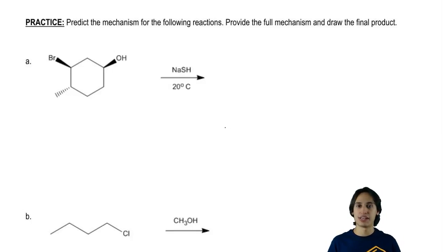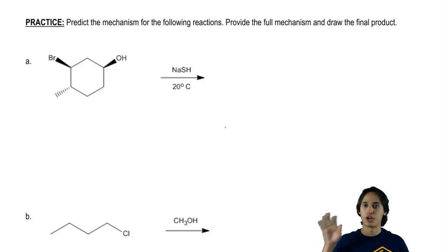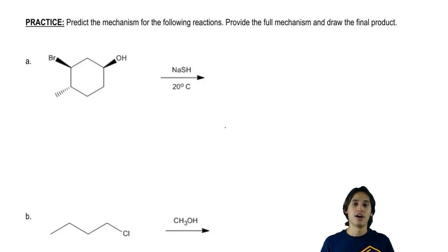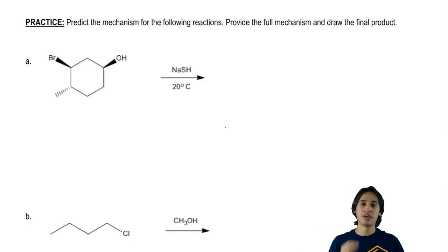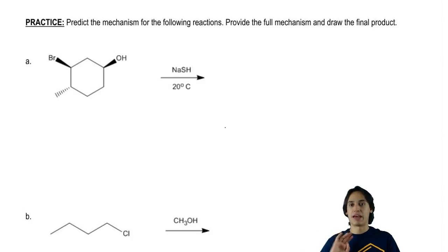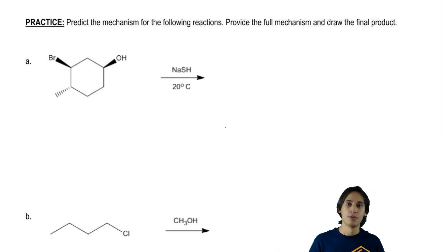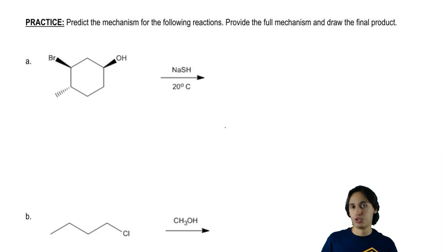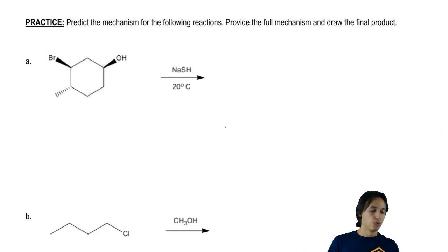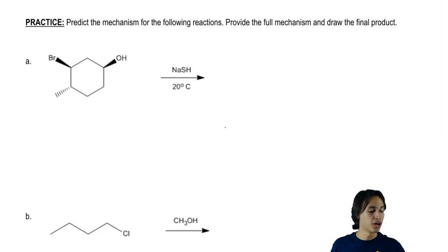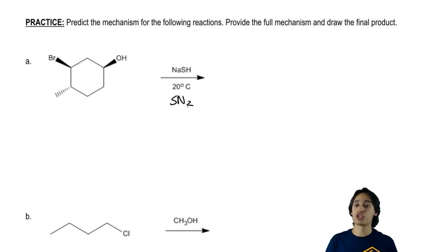For these questions, I expect you guys to have the Big Daddy flowchart printed out next to you, because I'm not going to be able to move back and forth between pages — I just want to stay on this page. But I will guide you through it as it's next to you. What mechanism did you guys get for this question? Hopefully what you got was SN2. If you used the flowchart correctly, that should have been the right mechanism.